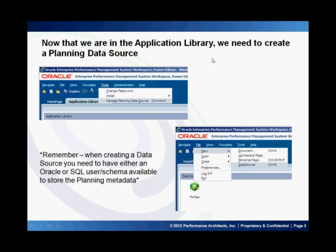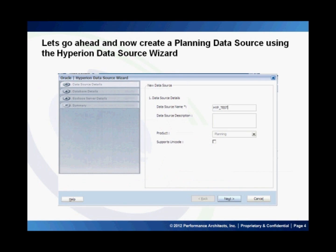Now that we are in the application library, we need to create a planning data source. I'll go to Tools and then Manage Planning Data Source. I'll then need to create a new one by going File, New, Data Source. Remember, when you create a data source, you need to either have an Oracle or SQL user schema available to store the planning metadata in.